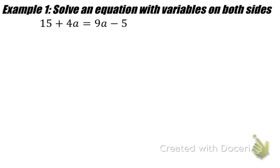Let's look at example number 1. We have to solve an equation with variables on both sides: 15 plus 4a equals 9a minus 5. We have the 4a on the left side of the equation and the 9a on the right side of the equation.